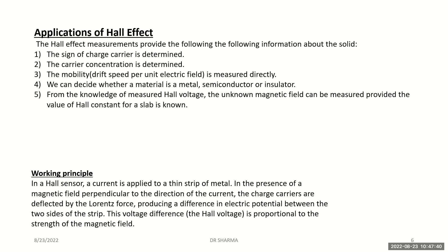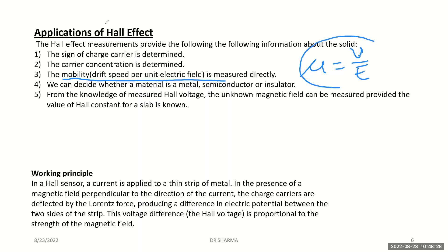You should remember these two expressions to solve numerical problems. The Hall effect can be used to find the sign of the charge carrier, because for negative charges the Hall coefficient is negative and for positive charges it is positive. We can also calculate the carrier concentration, which means the electron density or in general the charge density. Additionally, we can directly measure the mobility of charges, which is the drift speed per unit electric field.